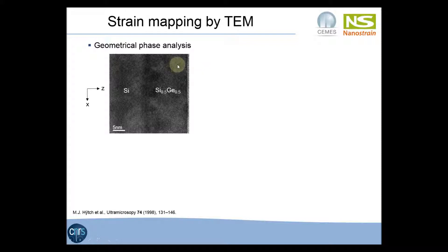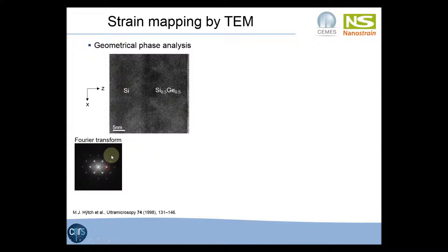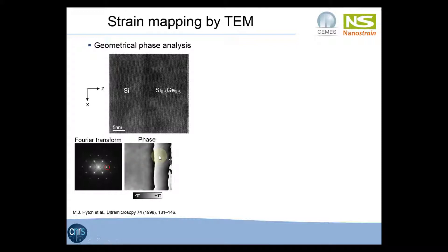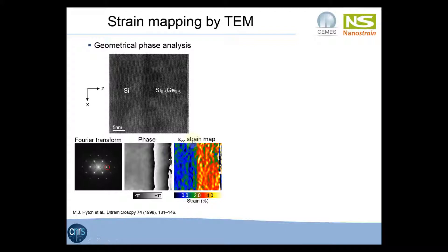At CMS we use mainly two techniques for strain measurement. The first one is called geometrical phase analysis. The principle is to first acquire a high-resolution image that shows the lattice structure of the crystal — here it's an example of a silicon germanium layer grown on a silicon substrate. We then calculate the Fourier transform of this image. The Fourier transform contains several spots, each corresponding to a different set of lattice planes. We apply a mask to a single spot, and by performing an inverse Fourier transform, we can isolate the signal corresponding to that set of lattice planes and separate the phase of this signal. The phase is related to the displacement of the atoms.